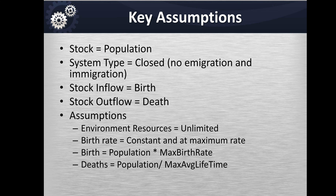In this example the assumptions are that there will be just one stock in the model and we will call it the population stock. We will assume that the system type is a closed system, so there is no immigration or emigration — we are not adding any more people or people getting out through other channels. The only way new people are added is birth, and the only way people leave is through an outflow which is death. So the stock inflow is birth and the stock outflow is death.